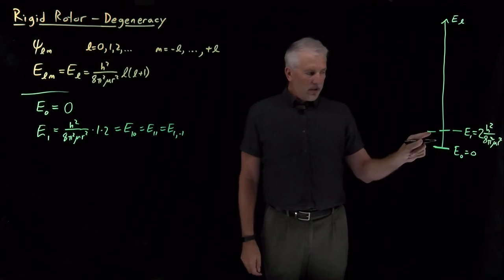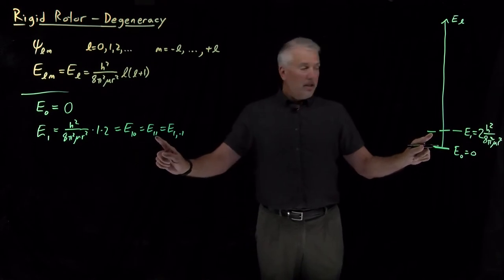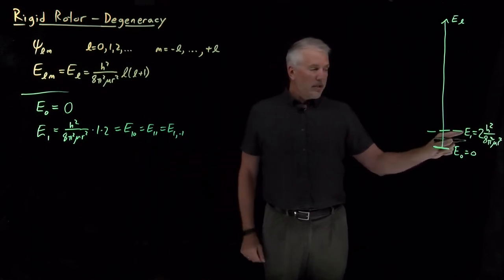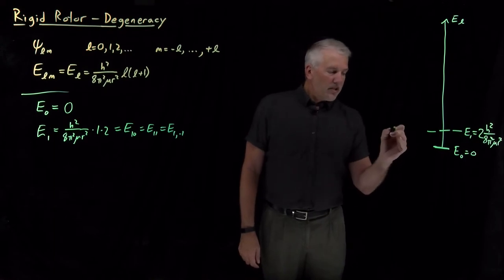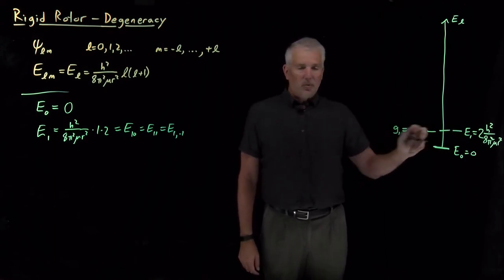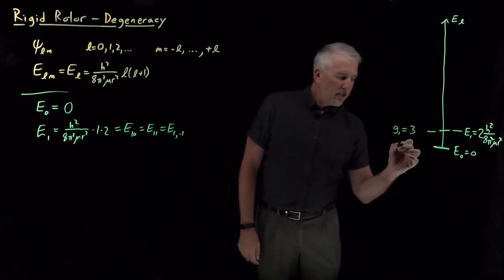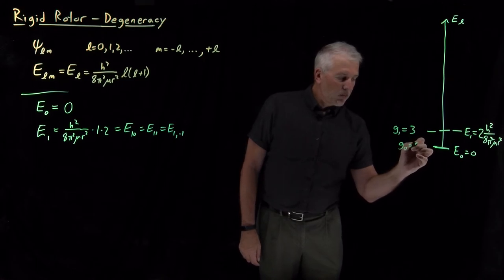So, we could number these however we want, but the L equals 1, M equals 0, M equals 1, M equals minus 1, those three states all have the same energy as each other. So, here, their degeneracy, the degeneracy of the L equals 1 level, is three. There's three states with that energy. The degeneracy of the zeroth level is just one. There's only one state that has that energy.